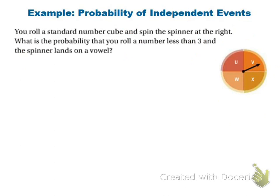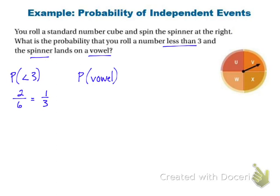Another 'and' problem: probability of rolling a number less than three and the spinner landing on a vowel. Numbers less than three are one and two, so two out of six, which is one-third. On the spinner, the only vowel is 'U,' giving one out of four. Multiply one-third by one-fourth to get one-twelfth, or 8.3%.